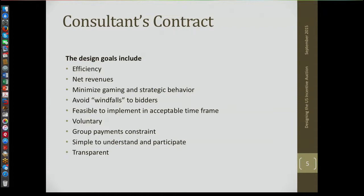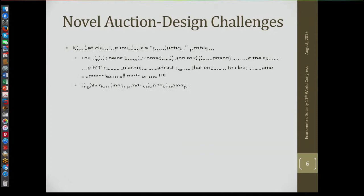I was asked to sign a contract in September 2011 to put together a team with these design goals for the auction. They wanted efficiency; they wanted net revenues to be adequate, whatever that means; the design should minimize gaming and strategic behavior; avoid windfalls to bidders; be feasible to implement in an acceptable timeframe; participation is voluntary; a group payments constraint — they were paying attention to the core and thinking about core-selecting auctions. It should be simple to understand and participate, and transparent — essentially easy to audit after the fact. Those were the design goals for a $40 to $80 billion auction.